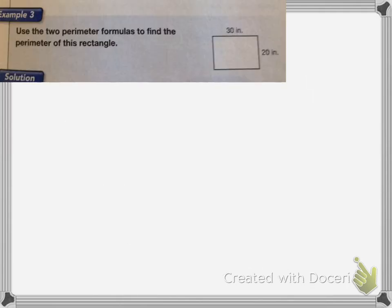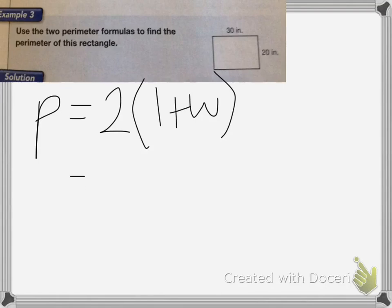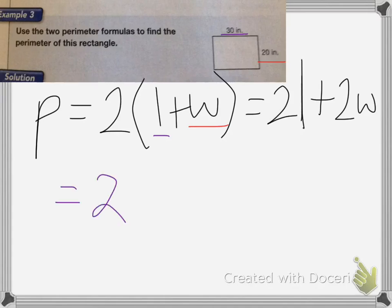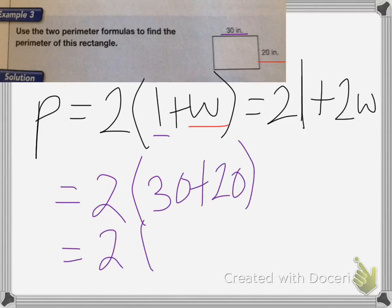This next one has to do with perimeter, and it says use the two perimeter formulas to find the perimeter of the rectangle. The first perimeter is 2 times L plus W, and then the second formula is 2L plus 2W. So using both of these, my length is 30 inches and my width is 20 inches. So it's going to equal 2 times 30 plus 20, which is equal to 2 times 50, which is equal to 100 inches. So that's doing it the first method.